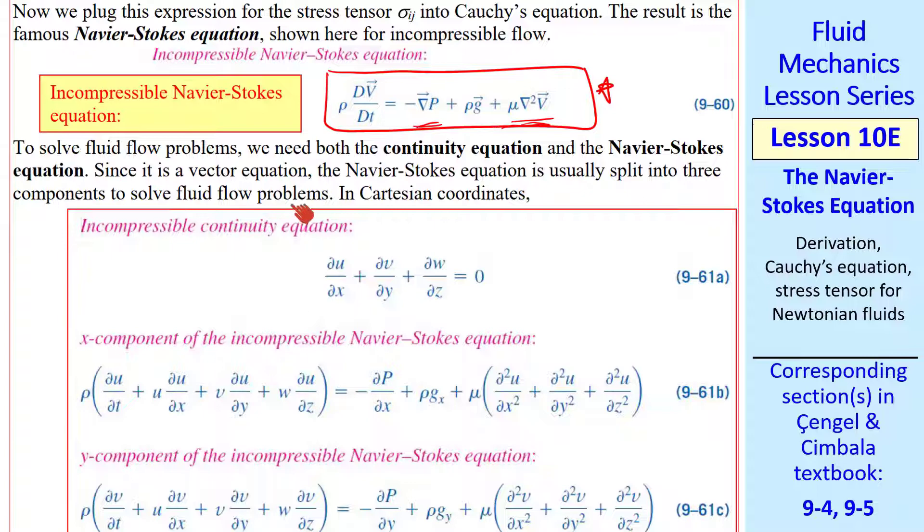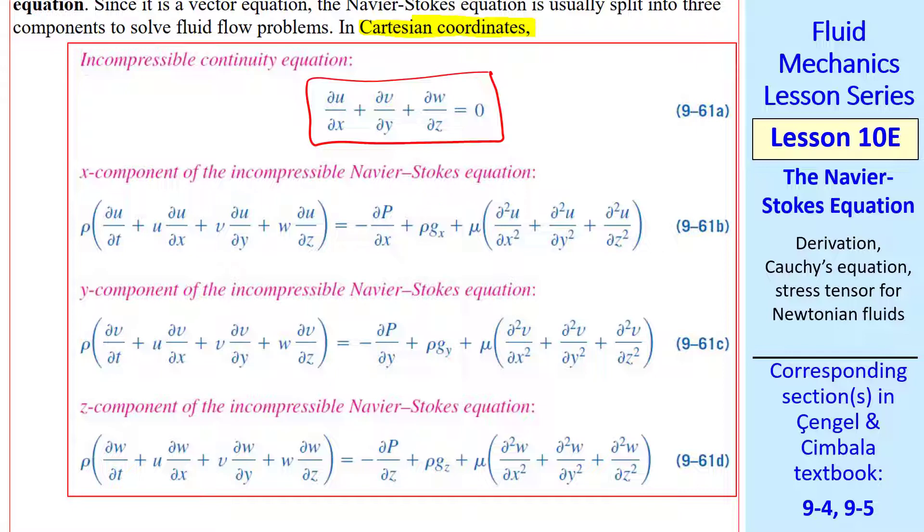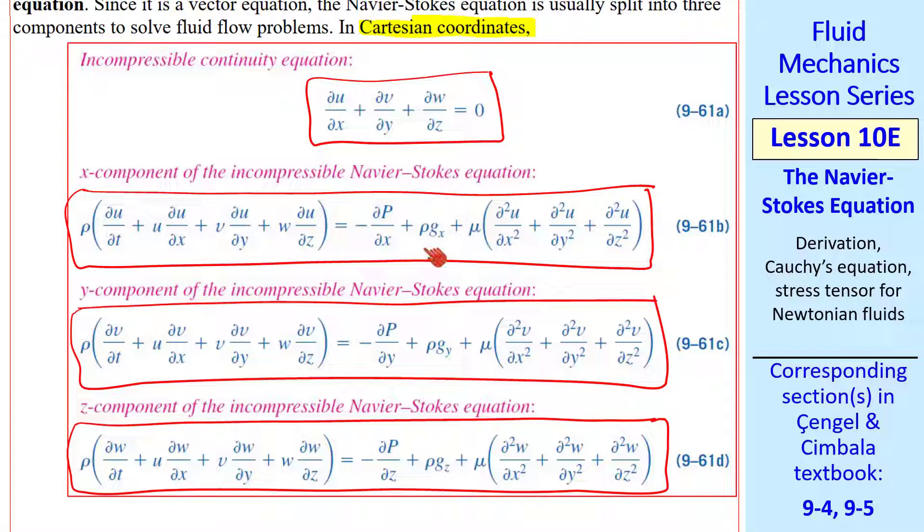In Cartesian coordinates, we have the continuity equation, as we saw in a previous lesson. This is the incompressible form of the continuity equation, which is what we'll use in this course. And here are the three components of the Navier-Stokes equation, the x component, the y component, and the z component. Here we make provision for gravity to be in any direction, but normally we have gravity in the minus z direction. These equations are valid when the flow is incompressible, and the fluid must be a Newtonian fluid. If we could solve these equations, we could find solutions for all kinds of flows. But as you can see, these equations are rather complicated and very difficult to solve. In upcoming lessons, I'll show you how we can use these equations to solve some simple flow fields, but anything more complicated will require computational fluid dynamics.